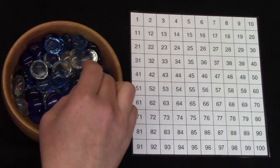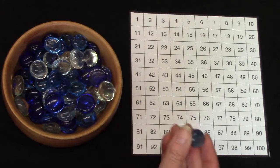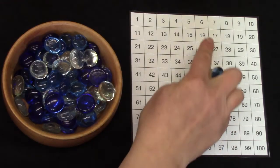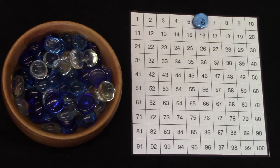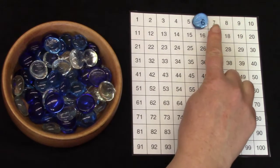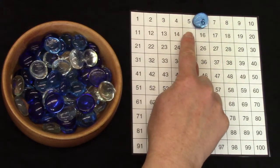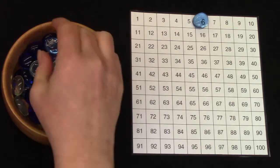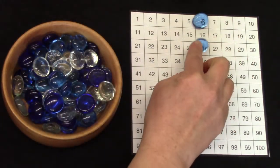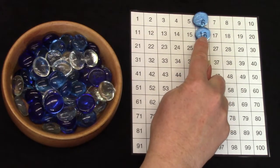So I'm going to find a number on our chart and I'm going to cover it with one of my pretty gems. I'm going to choose the number 6. We are going to add 10 to the number 6. We're going to count 1, 2, 3, 4, 5, 6, 7, 8, 9, 10. What is 10 more than 6? It's 16. I'm going to put another pretty gem right on the number 16.